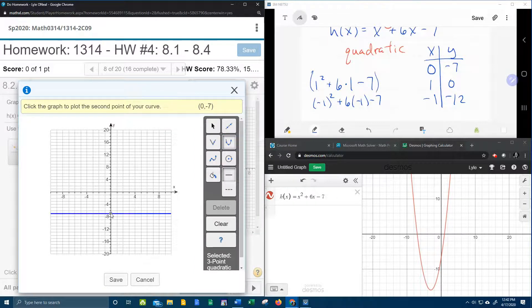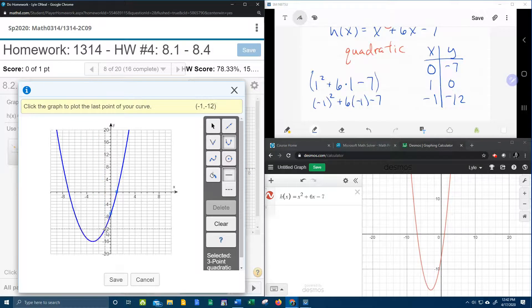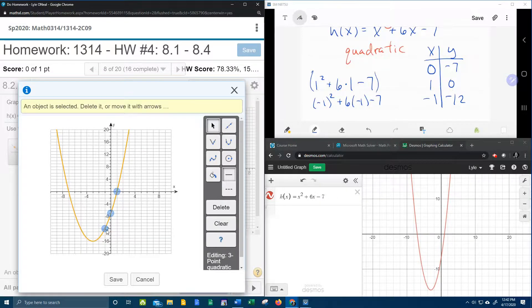1 and 0, and negative 1 is at negative 12, negative 1 is at negative 12, and I'm going to click there, and that shows my graph.